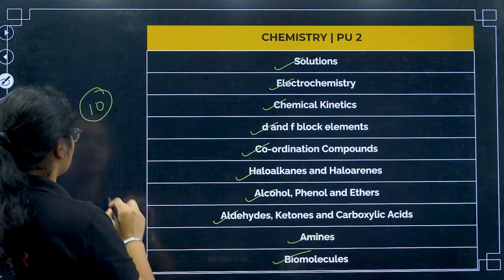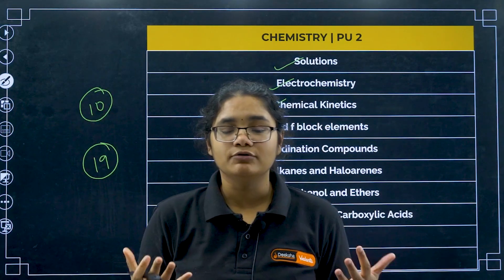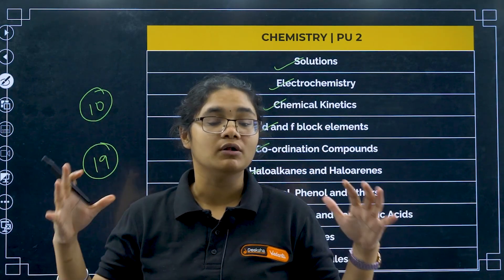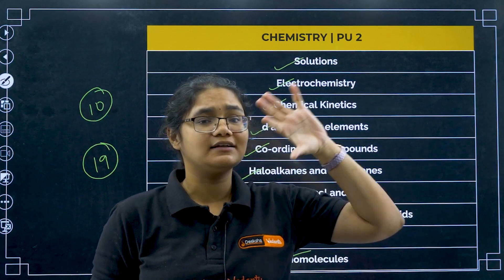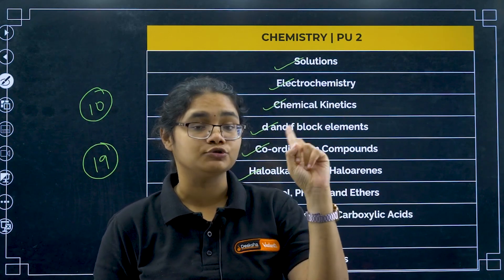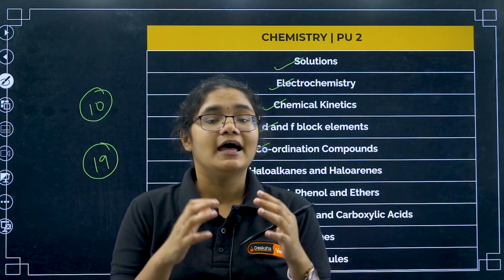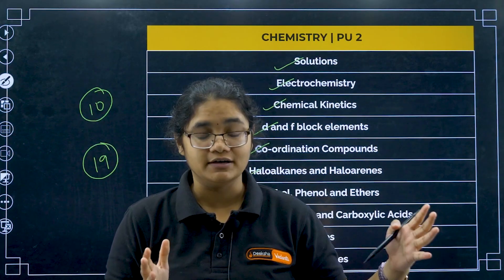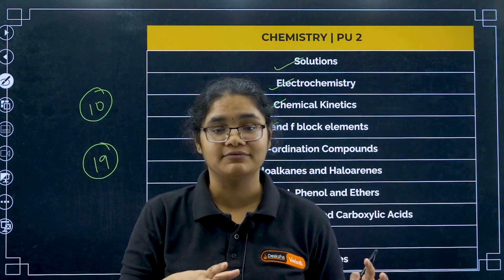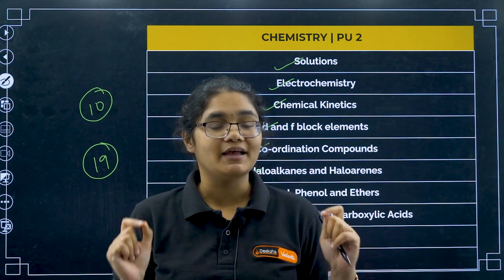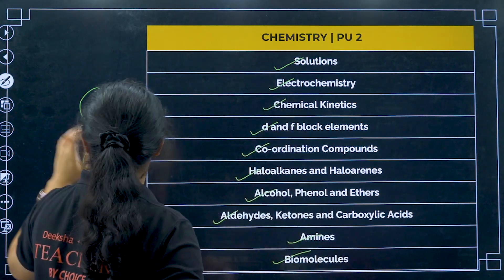So we know that in total there are 19 chapters. But do we have to give equal attention to all 19 chapters, or are there certain chapters where our focus should be more? To analyze this, we have taken an analysis of the last five years showing how many questions came from each chapter. And something very important is hidden at the end, so please watch till the end of the video.